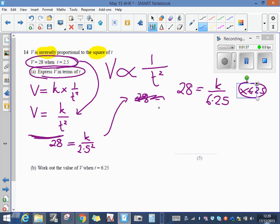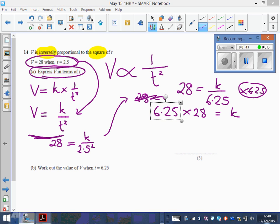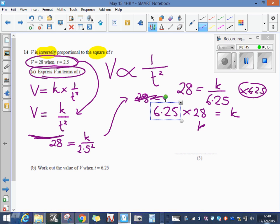On the left hand side I've got 6.25 times 28, and on the right hand side k. If I now work that out, k comes out as 175.